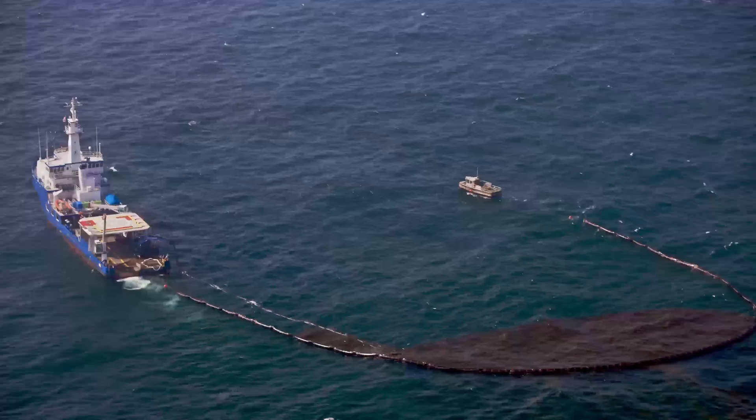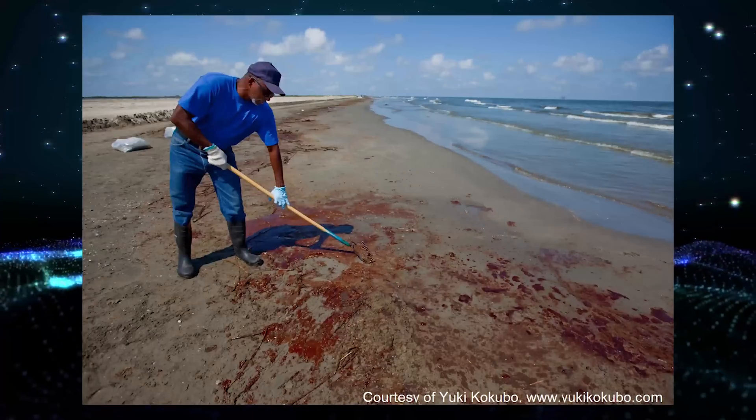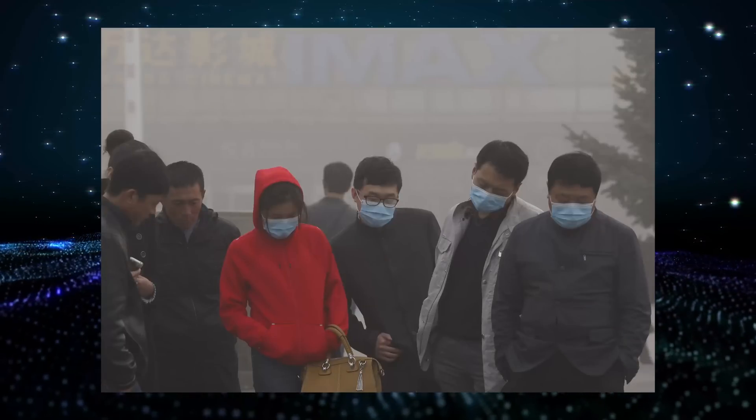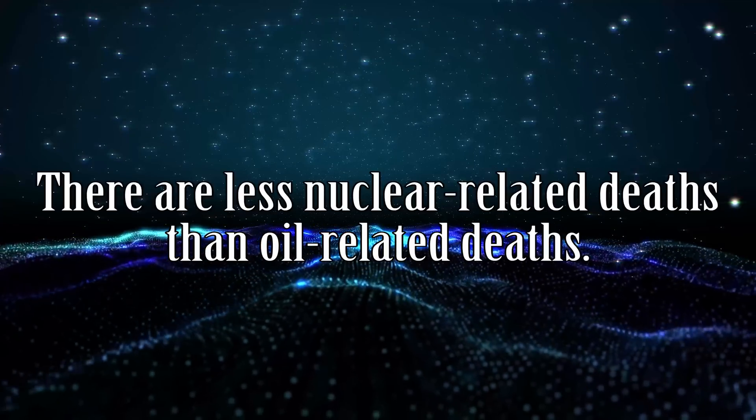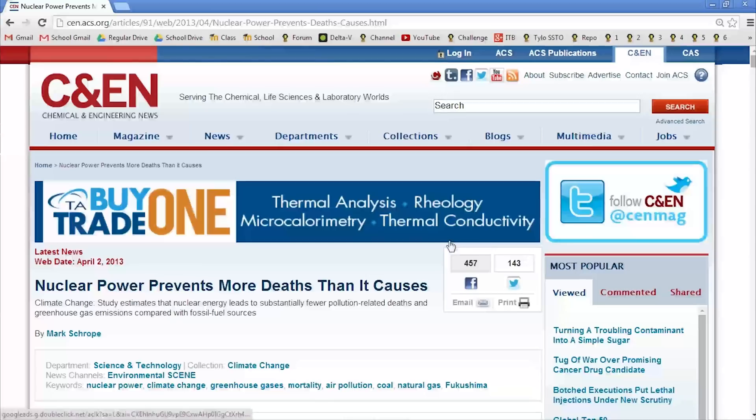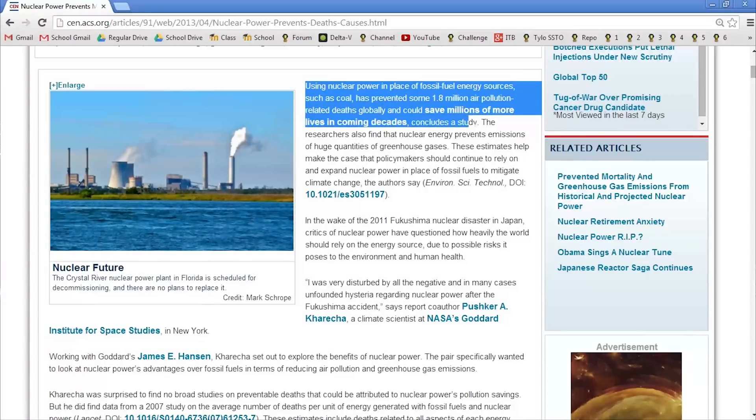But what about oil and coal? There have been lots of huge oil spills that have killed millions of animals and ruined thousands of miles of beaches. There have been thousands of people who have died of smog and pollution from coal plants. As it turns out, there are less nuclear-related deaths than oil-related deaths, and some scientists even say that using nuclear instead of oil has helped prevent approximately 1.8 million air pollution-related deaths.